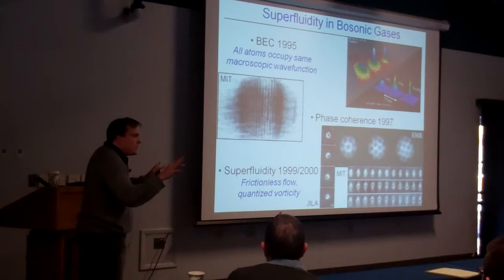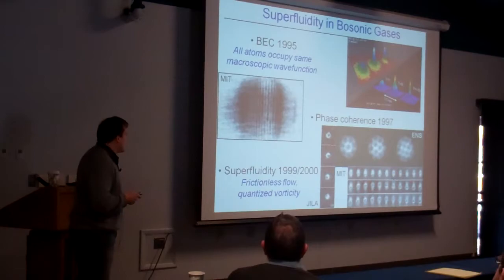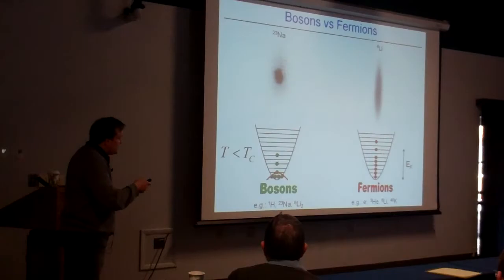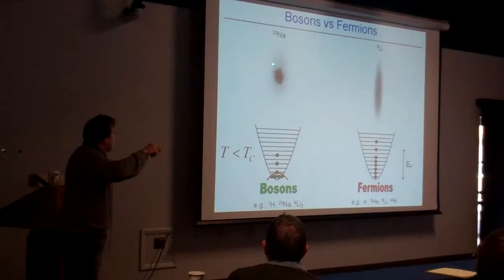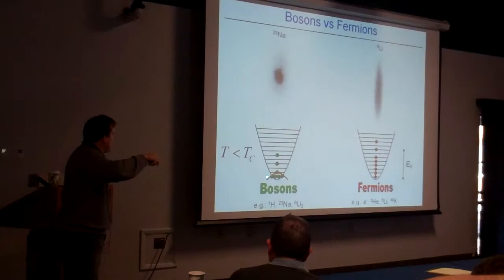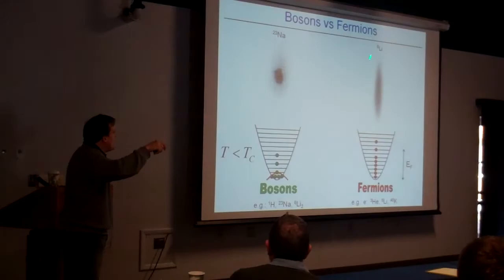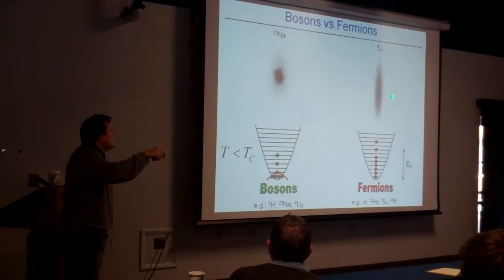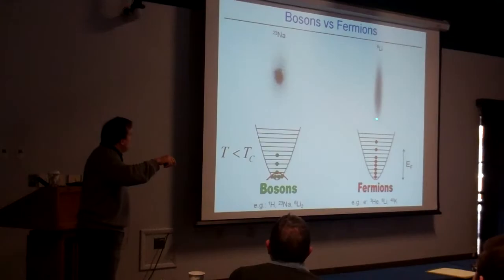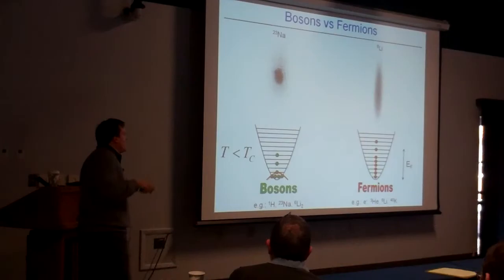Going back to comparing bosons and fermions in a trap: bosons condense until you have this very dark shadow in the center of the cloud, surrounded by some uncondensed thermal atoms. If you cool a Fermi gas — for example, lithium-6 — it looks, well, not so interesting. It's just one big blob, quite a bit larger than what you would expect from a Bose-Einstein condensate, because lots of atoms are in highly energetic quantum states since they cannot be in the ground state.